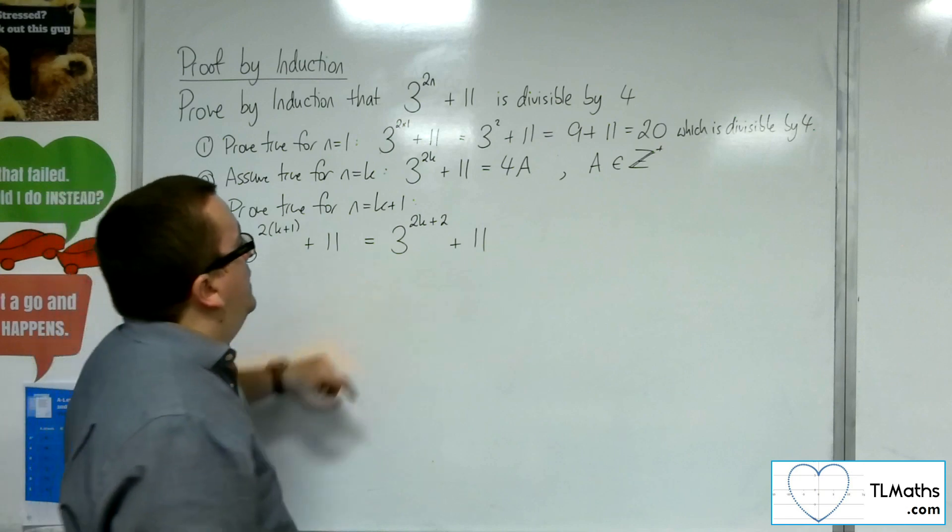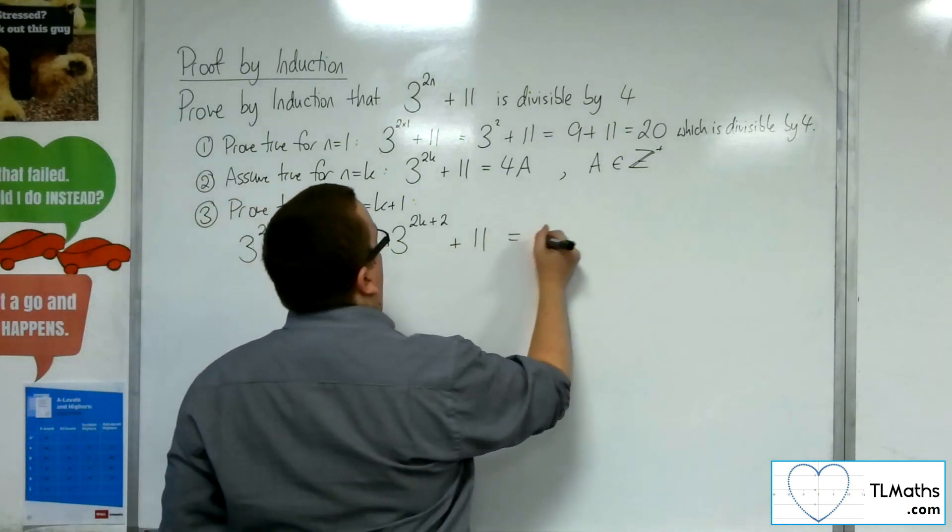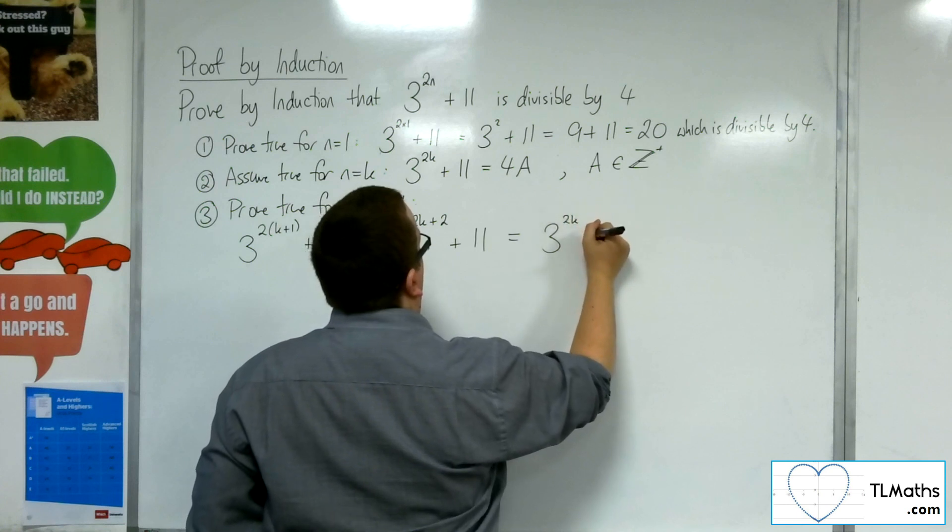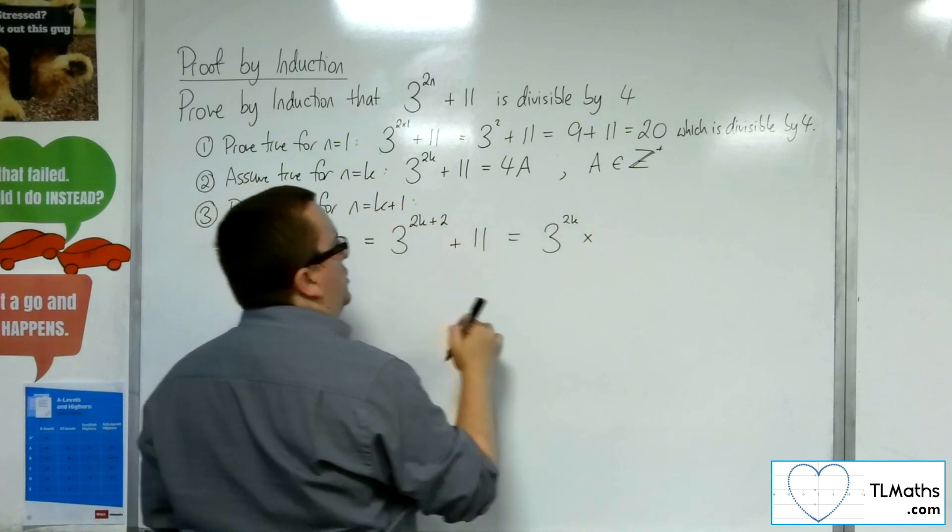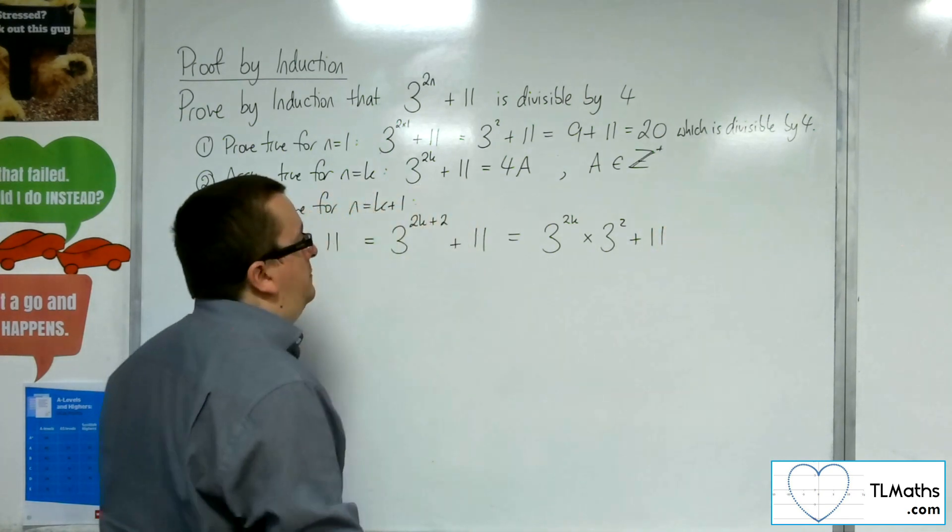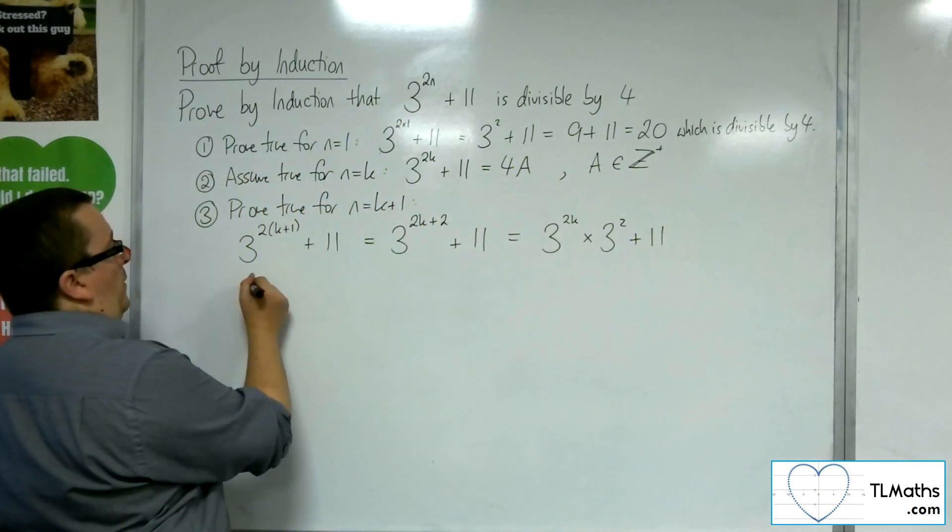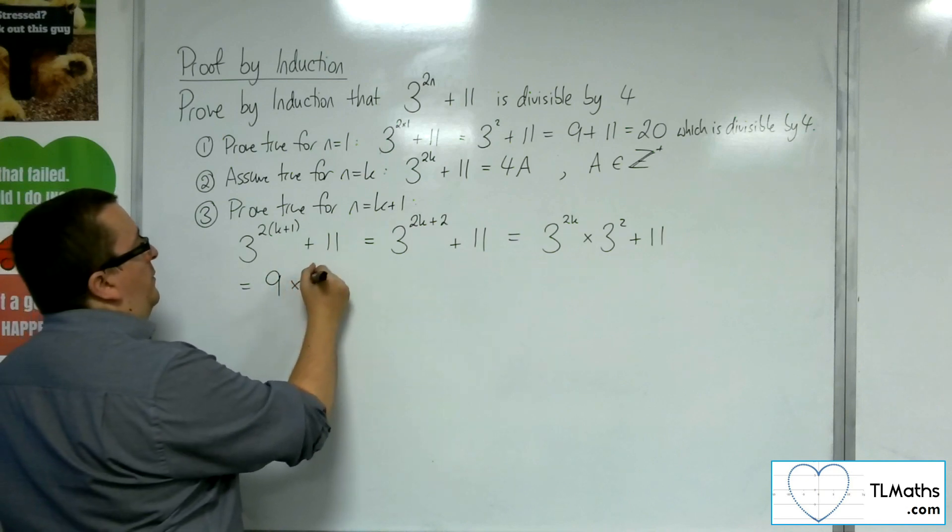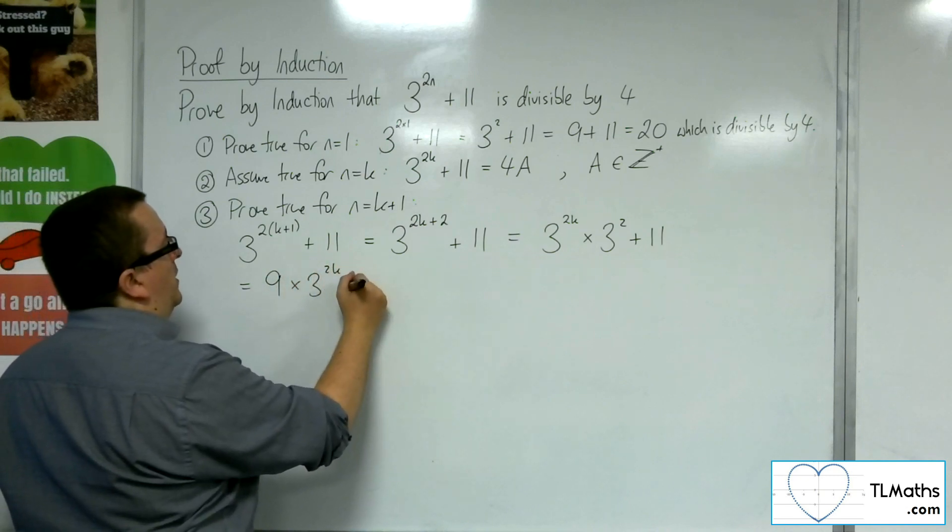Then we can write that as 3 to the 2k times 3 to the 2 plus that 11 still. So what we've got is 9, because that's the 3 squared, times 3 to the 2k plus 11.